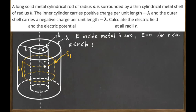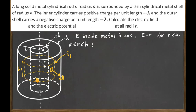For r between a and b, we pick a point at distance r from the central axis of the cylinders and choose an imaginary Gaussian surface. Because of the cylindrical symmetry, this Gaussian surface is a cylinder of height h and radius r. The area vector at every point on the side surface is perpendicular to the surface, and because of symmetry the electric field points in the same direction, since we have a positive charge inside.